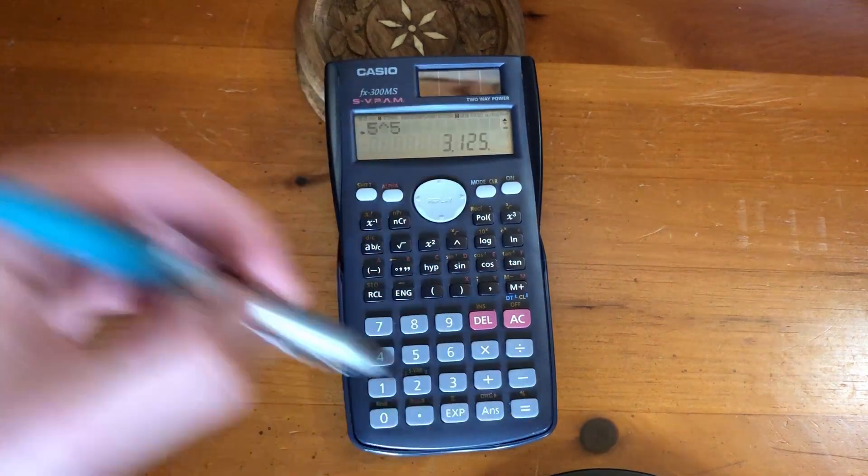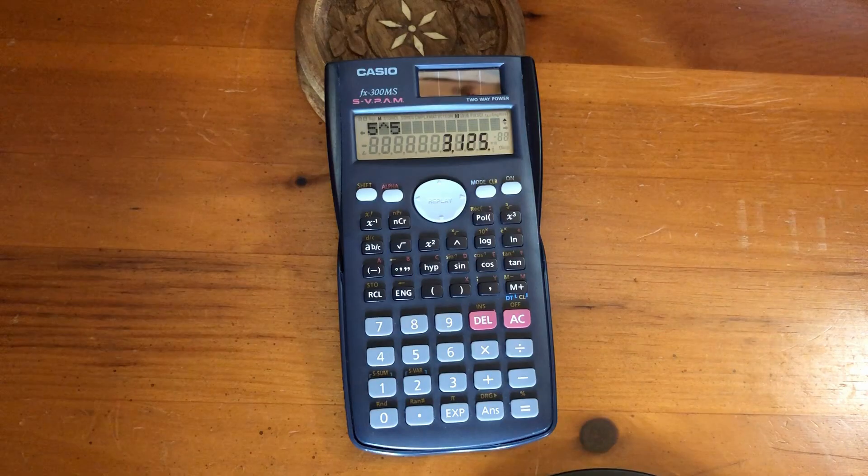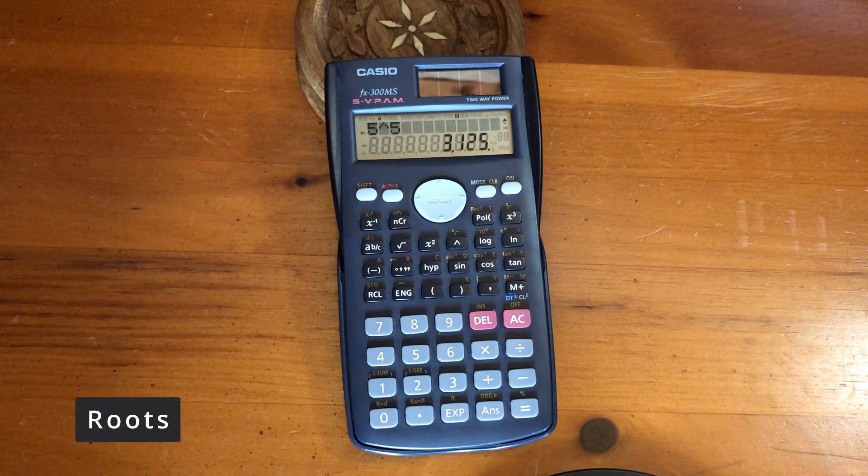5 to the power of 5 equals 3125. Now we're going to use the square root function.